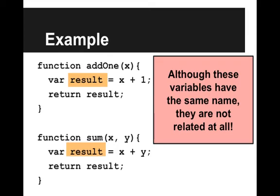The meaning of the result variable in the addOne function is the number with 1 added. But the meaning of the result variable in the sum function is the sum of x and y. So here, result is a local variable. It only exists in that function.